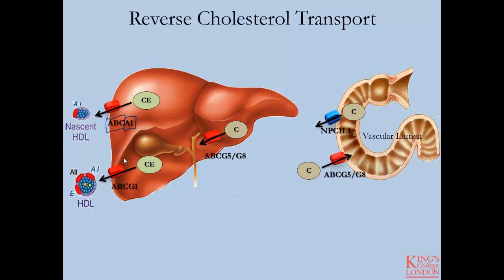They all have similar function, but differ slightly depending on the cells in which they are expressed and in terms of the particular lipoprotein they interact with. ABCA1 is expressed ubiquitously in the body — in the liver, in the gut, and highly expressed in macrophages as well as other tissues. ABCA1 will recognize nascent HDL, and upon association with ABCA1, nascent HDL particles will receive cholesterol from the cell it is associated with, increasing its cholesterol content.